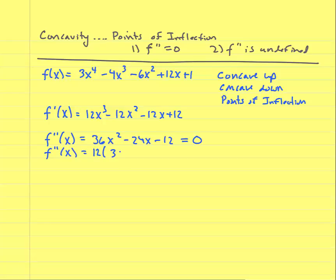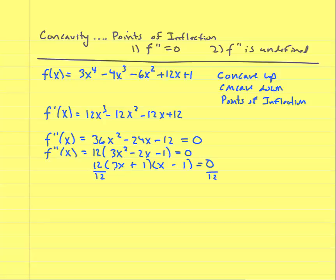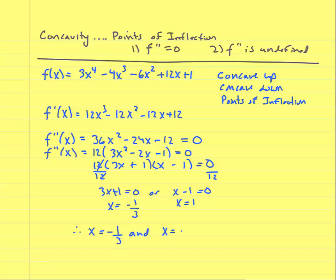Factoring out 12 from the second derivative gives 12(3x² − 2x − 1). Factoring the quadratic: (3x + 1)(x − 1) = 0, so x = −1/3 or x = 1. These are the critical numbers of the second derivative — possible points of inflection. They are also called critical numbers of the second derivative, distinct from the critical numbers of the first derivative.